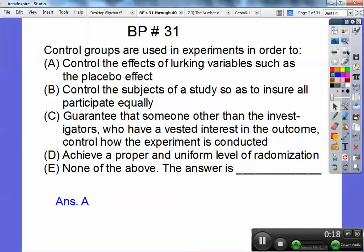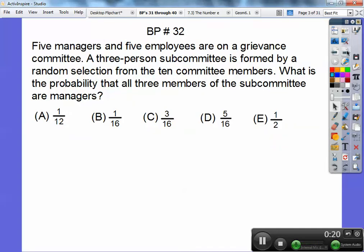Five managers and five employees are on a grievance committee. So that's ten people. A three person subcommittee is formed by a random selection from the ten committee members. So what's the probability that all three members of subcommittees are managers? We need to figure out how many ways can we get managers and how many ways can we do total. Let's get the total first. There's ten and we're choosing three.